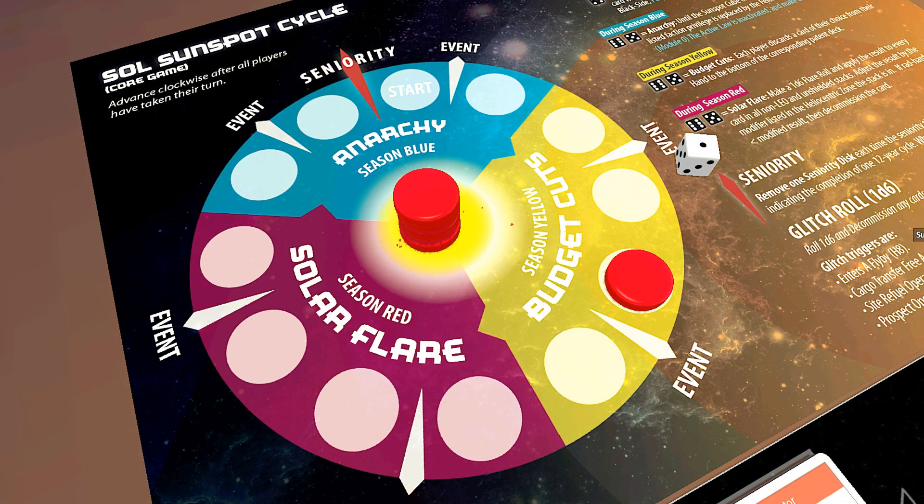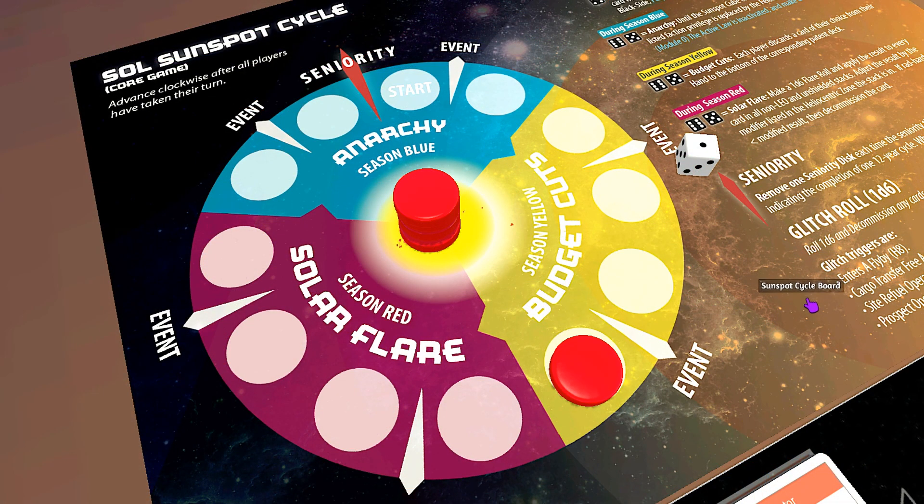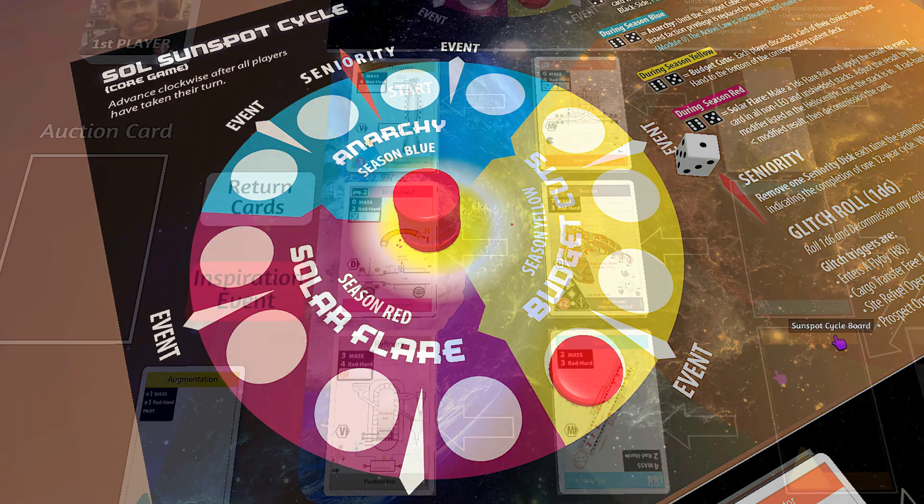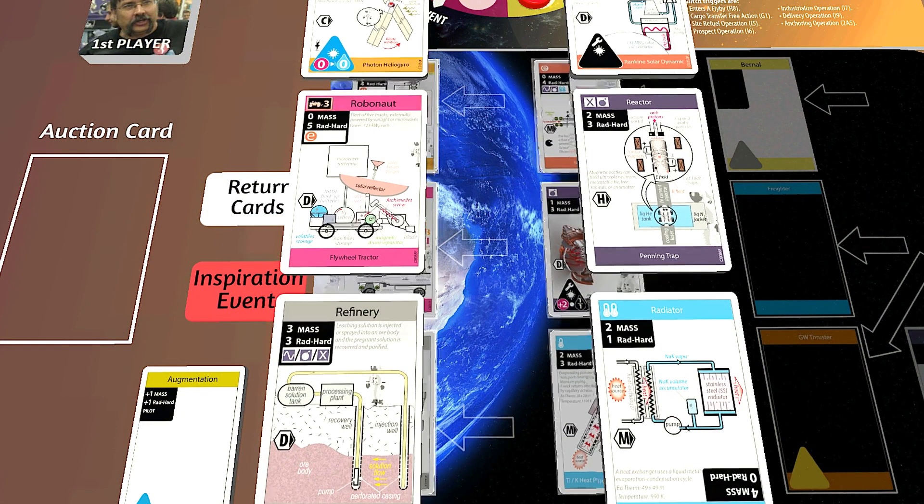The sunspot cycle moves past the event line, triggering the event. I roll a one—inspiration again. The cards reset.